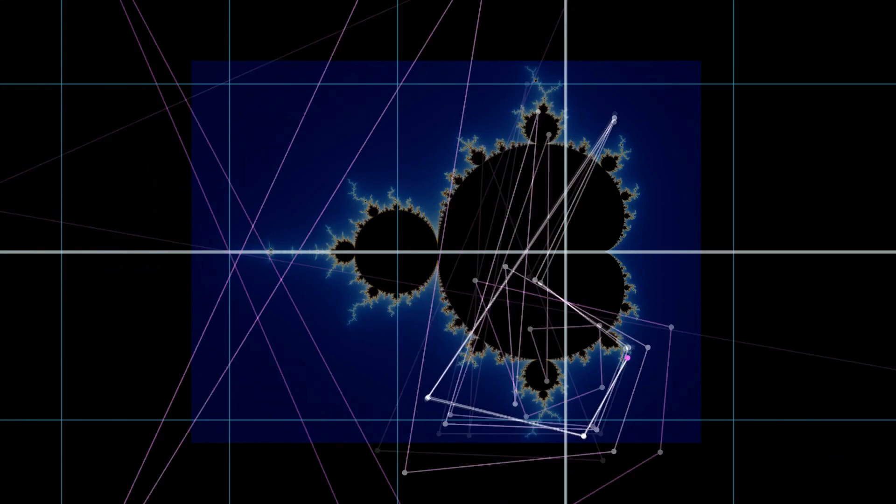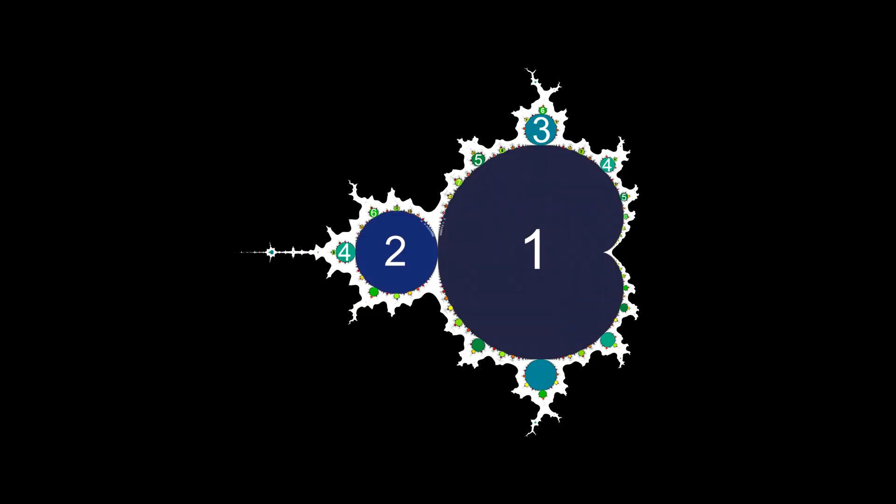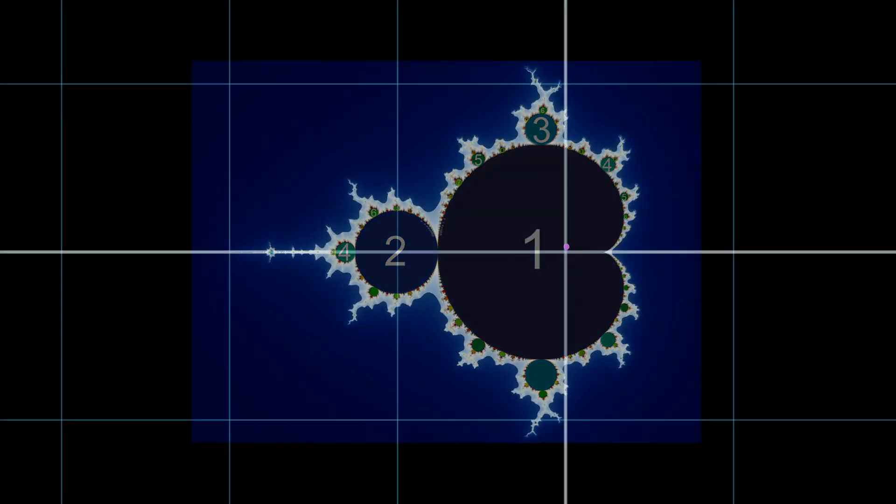Also, notice how there seems to be a cyclical nature to the points in the Mandelbrot set, such as a 2 cycle, and a 3 cycle. If you have ever seen an image like this, the numbers represent the cycle that the points in that region enter.